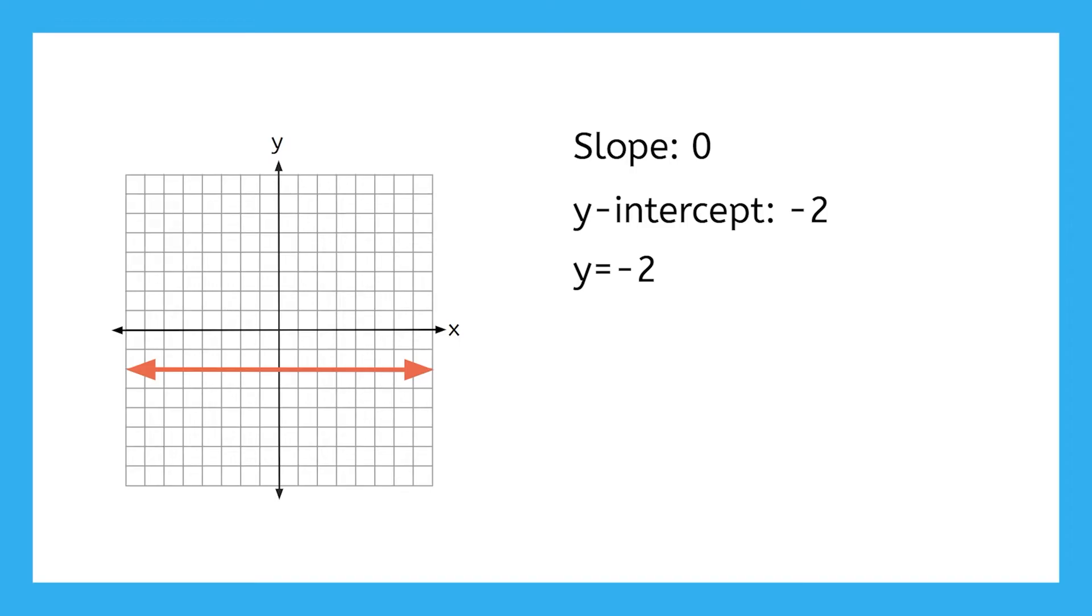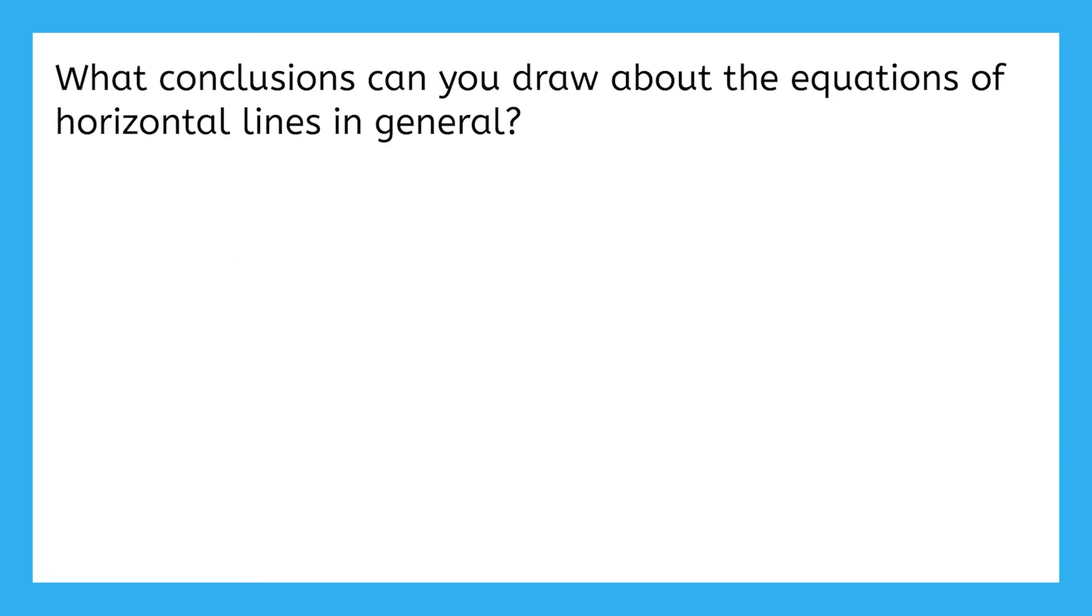Now that we've seen a couple of different horizontal lines, what conclusions do you think you can draw about their equations in general? The slope of horizontal lines will always be 0. So mx in the slope-intercept equation will always be 0x and will just cancel out to be y equals b.